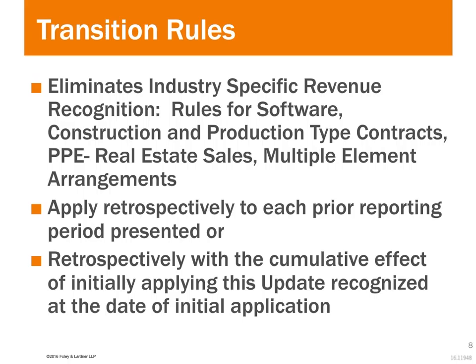Then there's the modified retrospective method, which basically says we're going to apply this update 1-1-18 with a cumulative effect adjustment to opening retained earnings and then disclose what the impact would have been on 2016 and 2017. So regardless of which method you select, you still need to know how it impacts 2016 and 2017. We're already in 2016, so as Frank points out, there's work to be done.